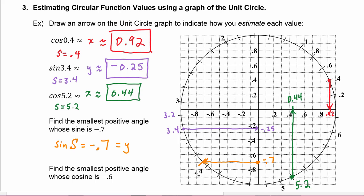We know this is four, and this would be 3.8. This mark right here looks like it's more than halfway, so this seems like it would be more than 3.9. The value 3.9 would be exactly halfway between 3.8 and 4, so we're a little bit more than that. Really, if you said 3.92, 3.93, or 3.94, any of those values would be about the same. So s is approximately 3.93.